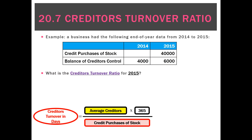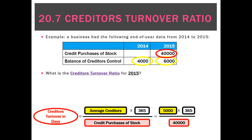The better way to calculate and interpret it is in days. We take average creditors of $5,000, multiply by 365, and divide by credit purchases of stock of $40,000, giving a total of 46 days.